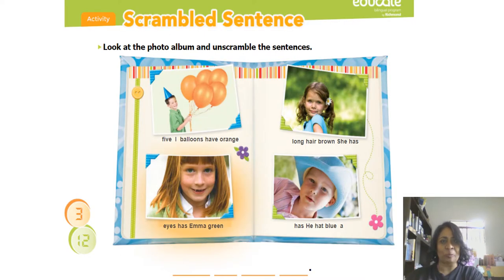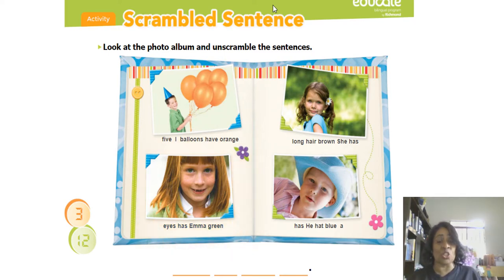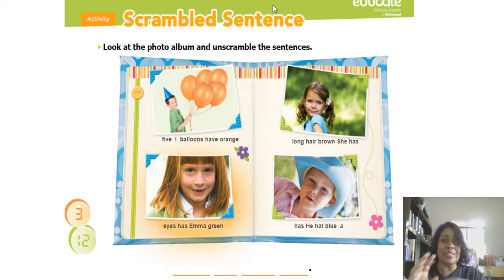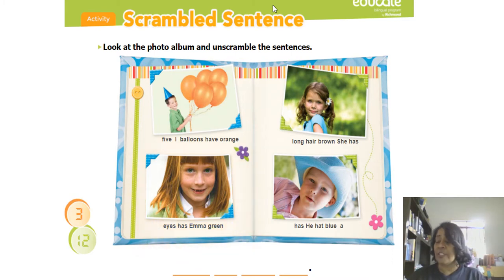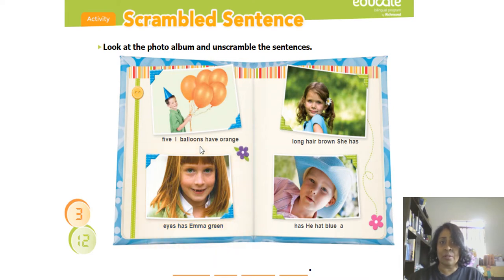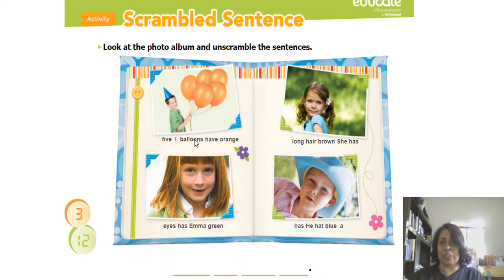Vamos lá então agora. Nessa atividade divertida, look at the photo album and unscramble the sentences. Então, ele está pedindo para você olhar as fotos e desembaralhar as frases. Por exemplo: 'Five eye balloons have orange' — nós temos que colocar essa frase na ordem.